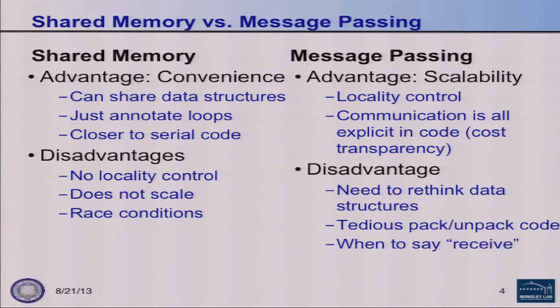In the message-passing style, the biggest advantage is scalability — it's why MPI is the most popular model for large-scale scientific applications. You get very good locality control, explicit communication making race conditions harder, and transparent costs since messages are expensive relative to computation. The disadvantage is that it's much harder to convert serial code, you have to pack and unpack data structures, and you have to figure out where to place receive calls — which is one of the main problems PGAS languages address.